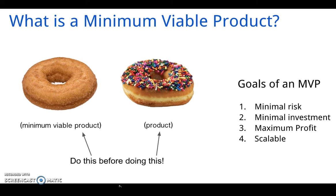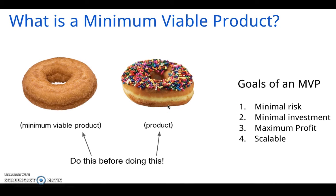Let's apply this to the donuts. The donut on the left, the plain one, represents the least amount of risk and investment. Why? Because I don't have to spend a lot of money on ingredients. Anyone can make it. There's not much risk associated with it. The one on the right requires additional funding because I have to buy more ingredients — the cream, the sprinkles. I might even have to hire someone to make this donut for me. Now, no doubt, this donut has more demand and also yields a higher profit margin, but it comes with risk and more money involved.